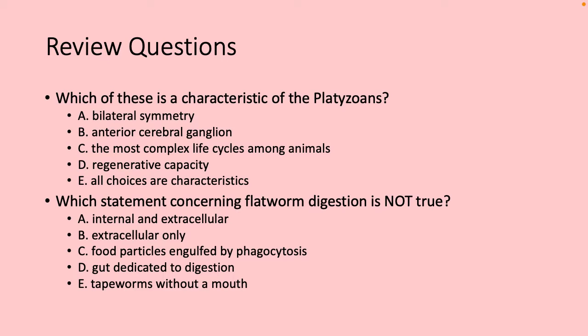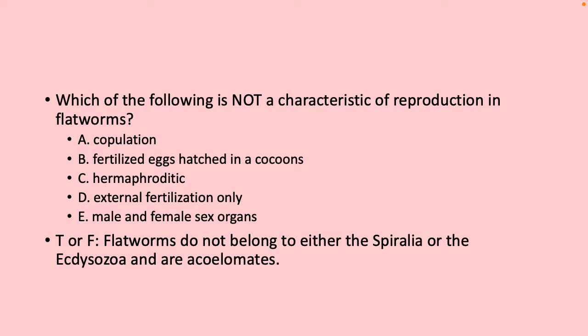'Which statement concerning flatworm digestion is not true?' It's D — they don't have a complete gut. 'Which of the following is not a characteristic of reproduction in flatworms?' It's D as well — they do lay eggs after insemination. Sorry, I forgot to make note of that. So copulation, internal fertilization, and hermaphroditism are all true characteristics.